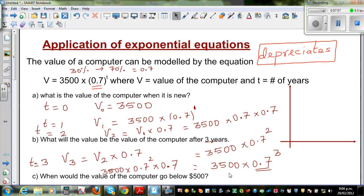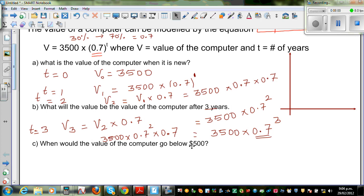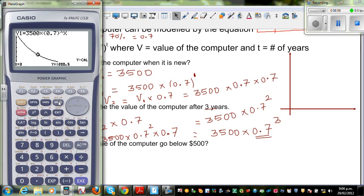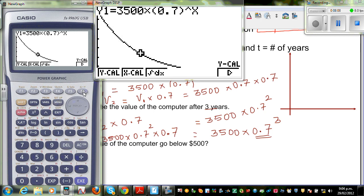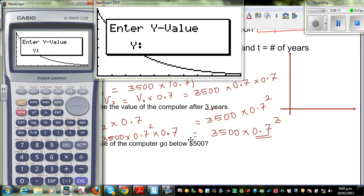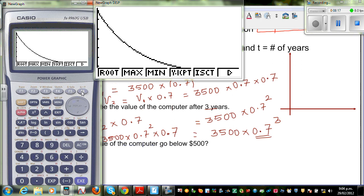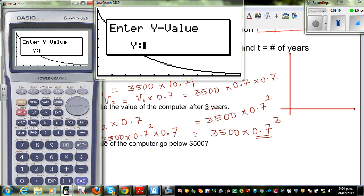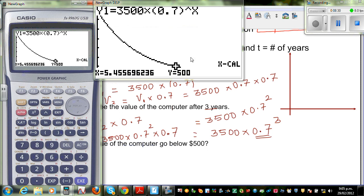And the third question was, when would the value of the computer go below 500? So I'll find exactly 500 first and then I'll answer it. So this is Gsol and I want to find Xcalc because we want to find the time. So I exit, draw, Gsol, I want to find Xcalc. So your Y value is 500. So we want to find after how many years would the computer become exactly 500? So it tells me,